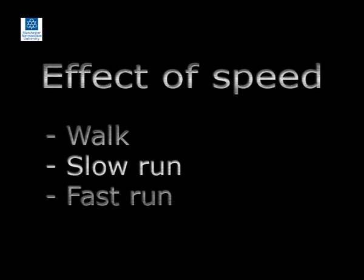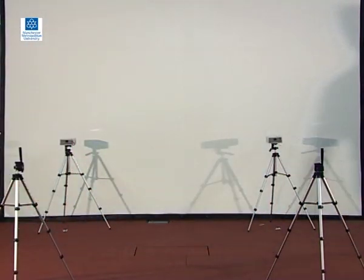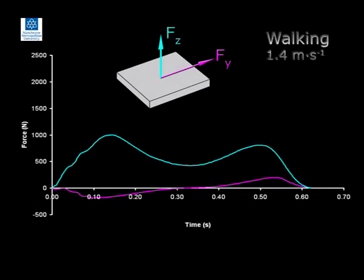The following section investigates the effect of walking and running speed on the magnitude of ground reaction forces. Three trials were recorded: one with the participant walking, one during slow running, and a third during fast running. The vertical force time trace recorded from walking shows two characteristic peaks that occur near the beginning and the end of the stance phase. The anterior-posterior force time trace is negative during the first half of the stance phase and positive during the second half. Negative and positive Fy forces are often termed braking and propulsive forces.